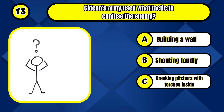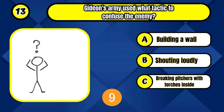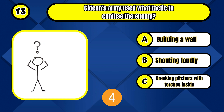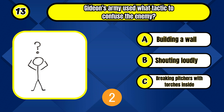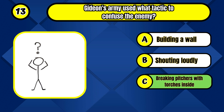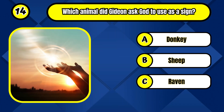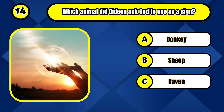Which tactical approach did Gideon's army employ to confuse the enemy? Breaking pitchers with torches inside. What creature did Gideon request God to employ as a sign?